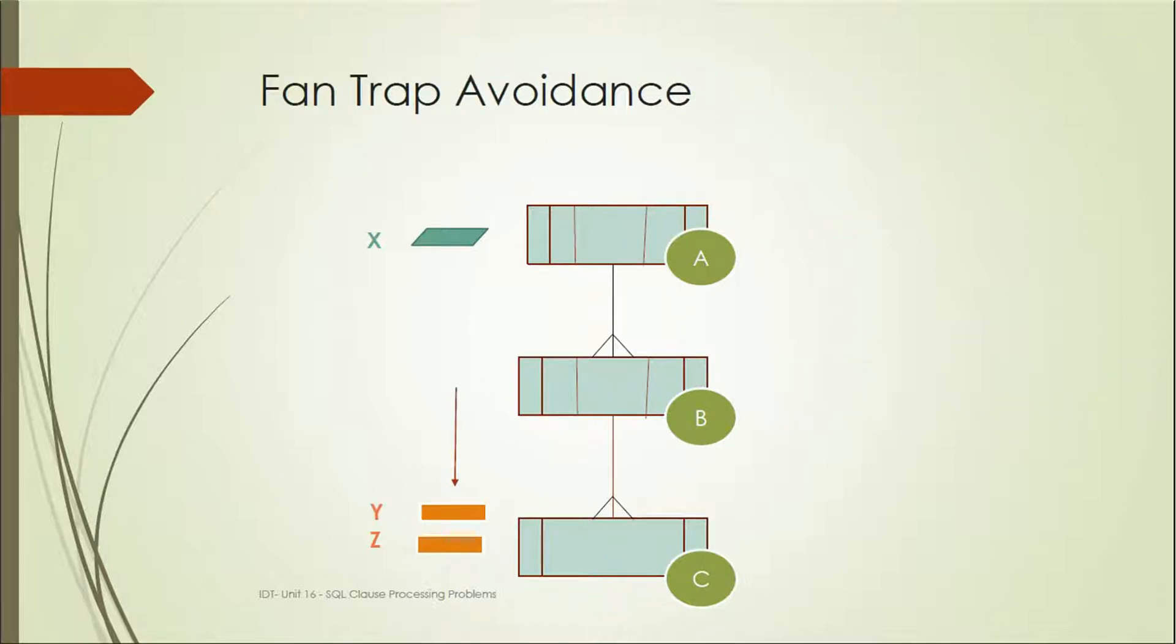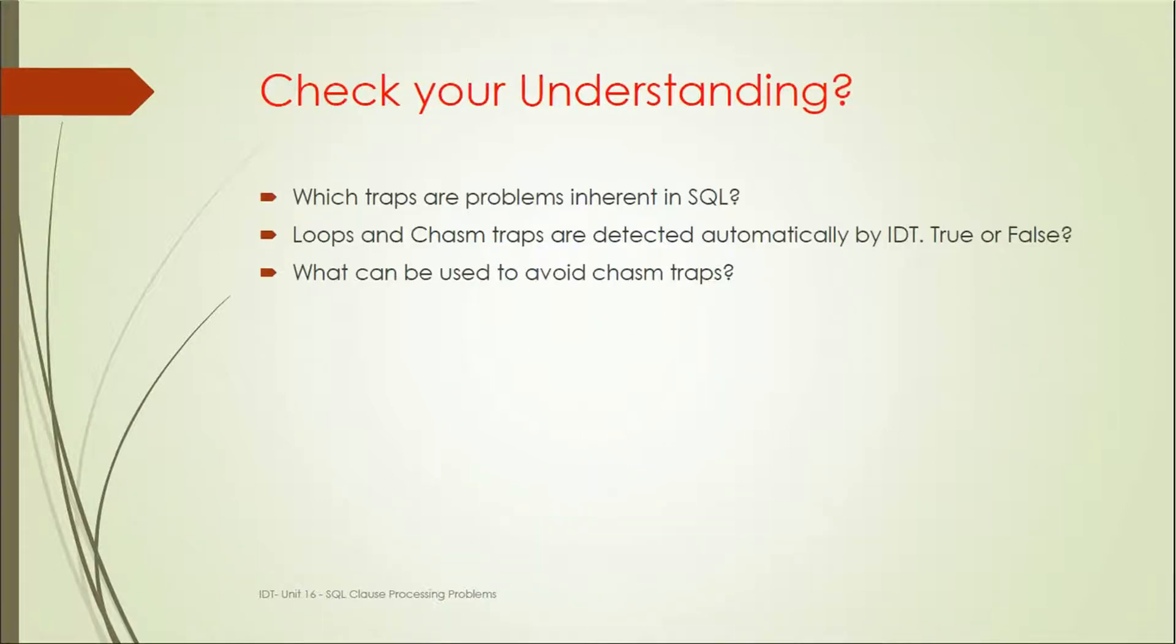The other method is fan trap avoidance. This means we can specify the dimension and measure from the third table only - we will not consider this second table in the query itself. So this is an avoidance of the fan trap.